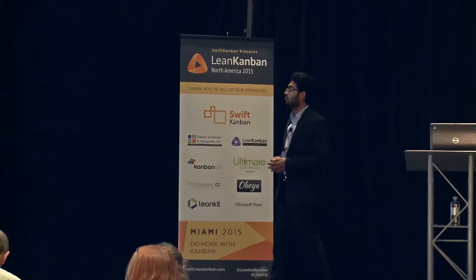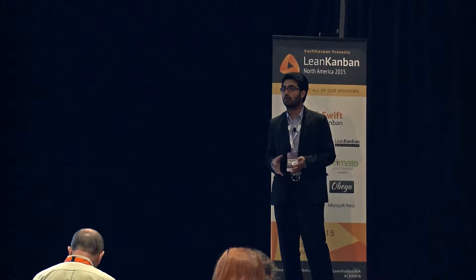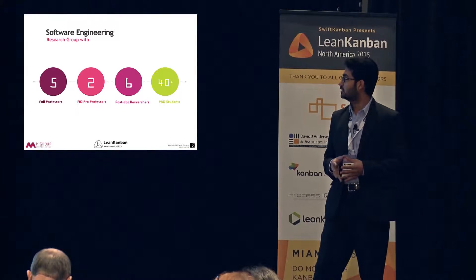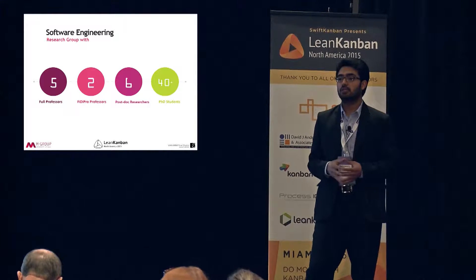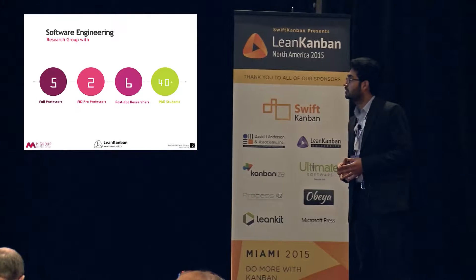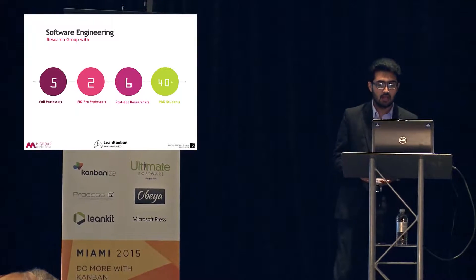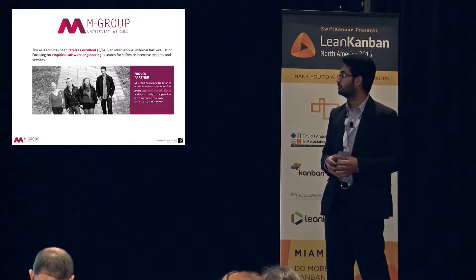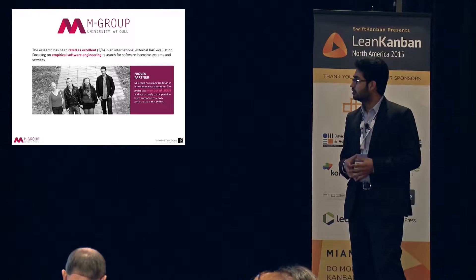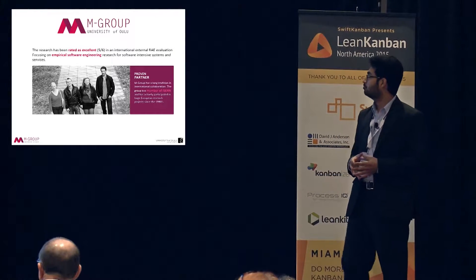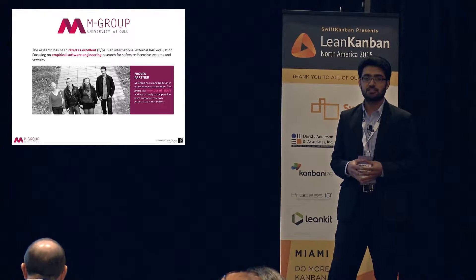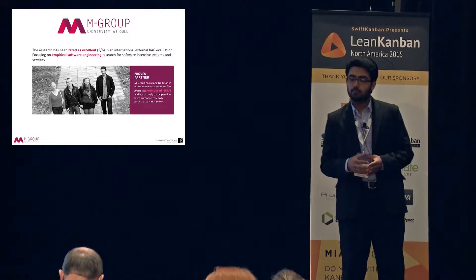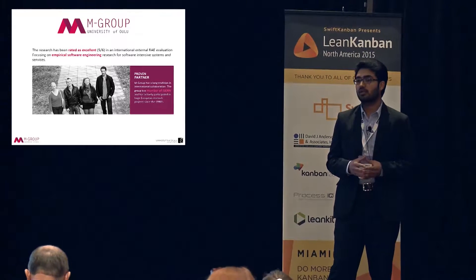In the software engineering department at the University of Oulu, we have a research group called M Group, which consists of five professors, two Finnish distinguished professors, six postdocs, and more than 40 PhD students currently working in different research topics. Under external evaluation, our group was ranked as excellent, and it is a proven partner of ICERN, the International Software Engineering Research Network, of which it is also a founding member. M Group takes part in most of the large European projects.